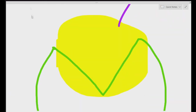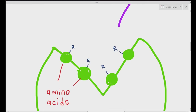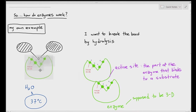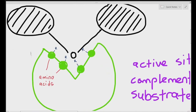If we zoom into the active site — enzymes are just proteins, and proteins are made up of amino acids. Each green circle represents an amino acid, and I'm drawing out R groups. It's very important that the enzyme is able to bind to the substrate, and for that to happen, the active site of the enzyme has to be complementary to the substrate. A common exam mistake is saying the active site has the same shape as the substrate — it's not the same shape, it is complementary or matching.